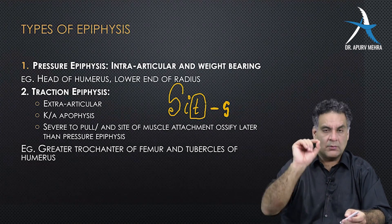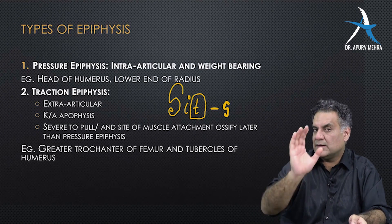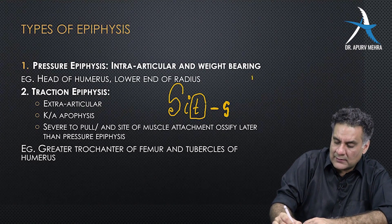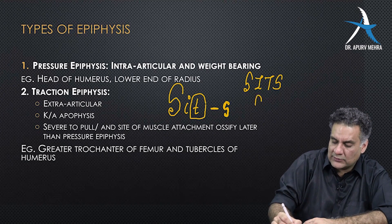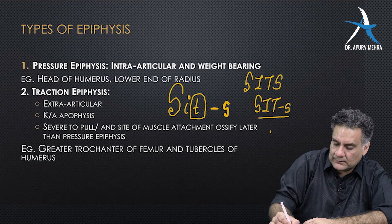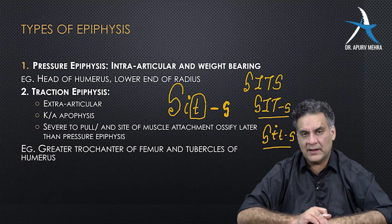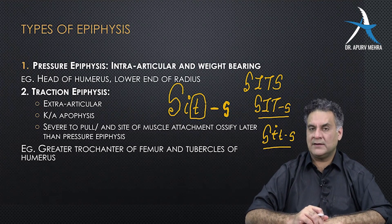One more catch: small 't' means teres minor, so that in an exam you don't get confused. In an exam, don't write the mnemonic as 'SITS' or 'SIT-S'. Write it correctly: small 's' for subscapularis, small 'i' for infraspinatus, small 't' for teres minor.